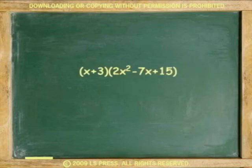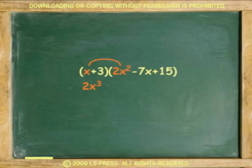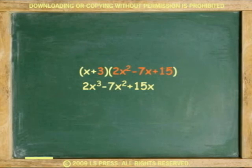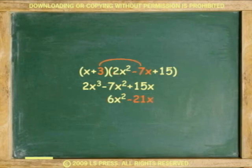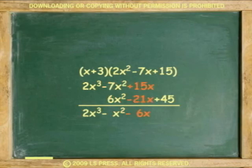Now let's multiply a binomial and a trinomial. We continue to multiply each term of the first polynomial by every other term of the second polynomial. For example, multiply. First term of binomial times trinomial: x times 2x squared, x times negative 7x, x times 15. Second term: 3 times 2x squared, 3 times negative 7x, 3 times 15. Combining the results: 2x cubed minus x squared minus 6x plus 45.